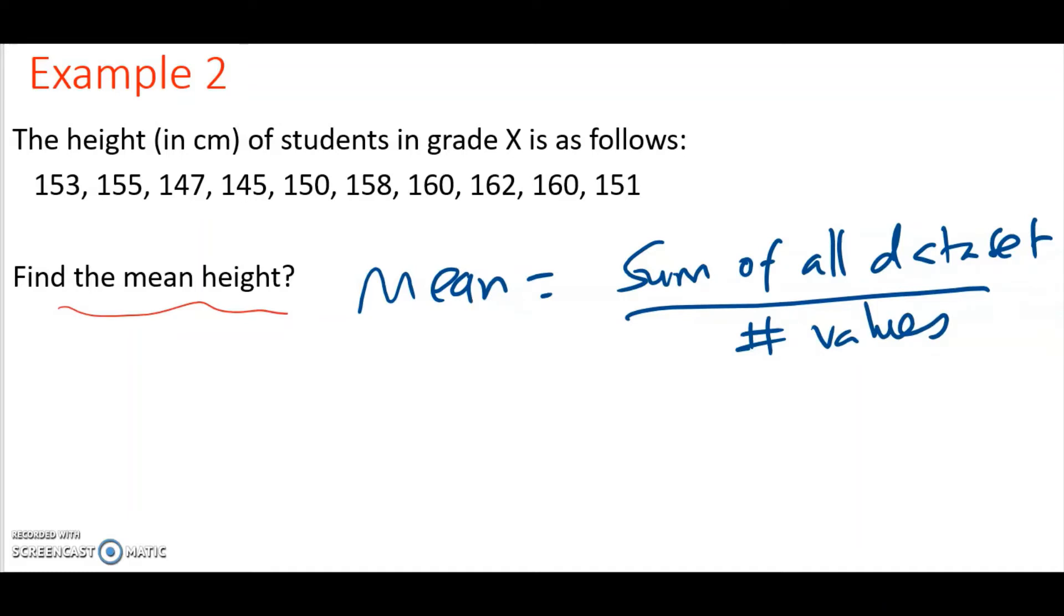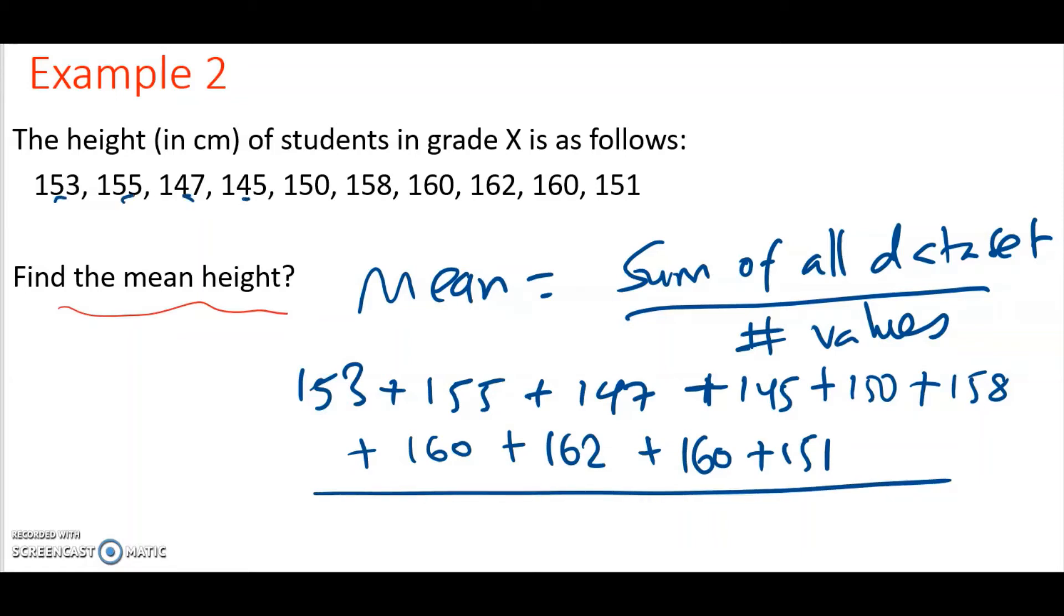What this means is that you add 153 plus 155 plus 147 plus 145 plus 150 plus 158 plus 160 plus 162 plus 160 plus 151, and then you divide by how many there are: 1, 2, 3, 4, 5, 6, 7, 8, 9, 10. So that will give me 1541.